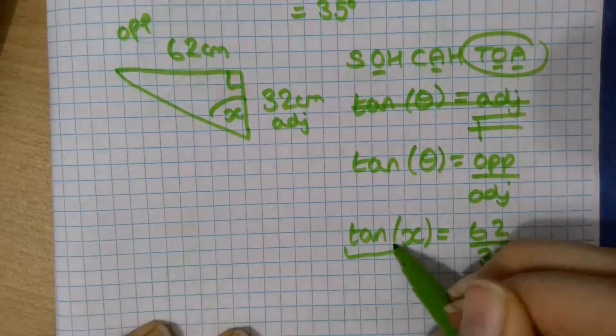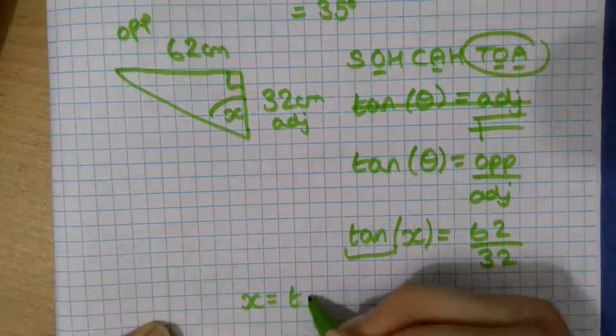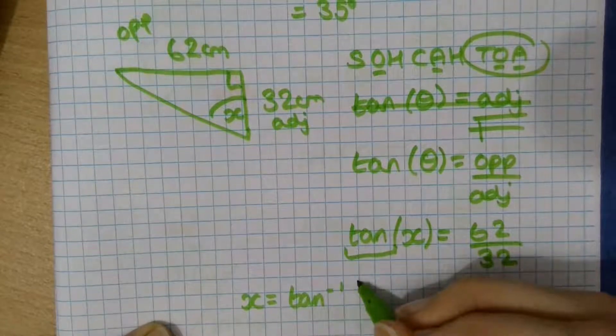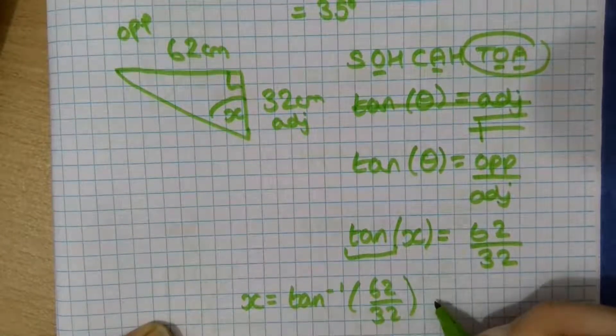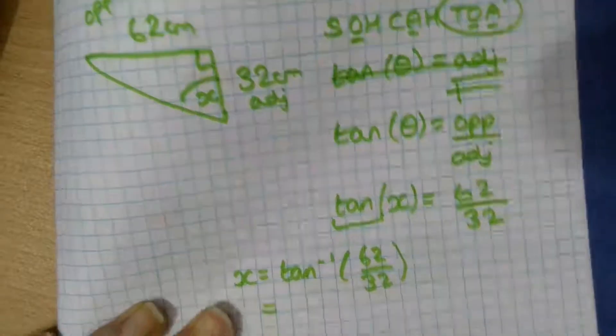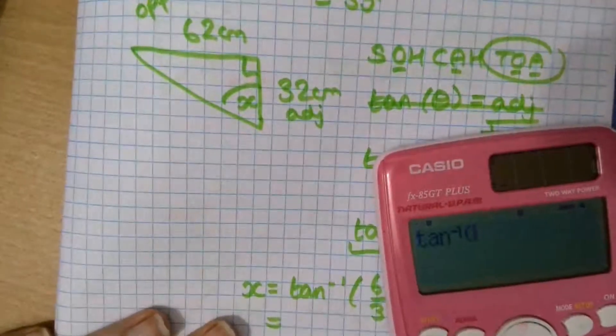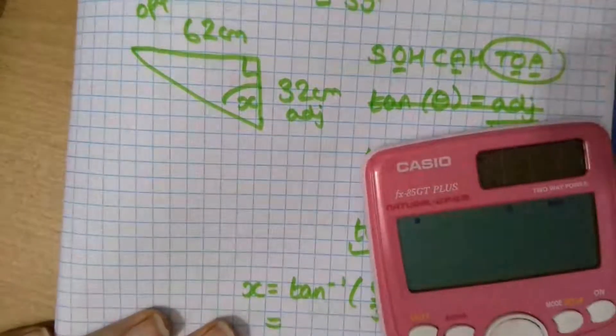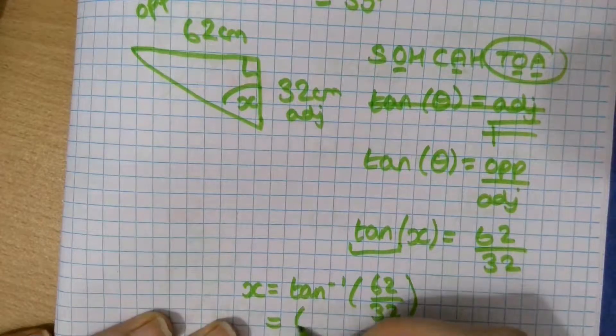Anyway, so we want to remove the function of tan. We're going to use tan inverse. And we're going to write that as tan with a little negative one power of my fraction, which is 62 over 32. And that's where I use my calculator. And that gives me 62.7 degrees, which is 63 degrees to the nearest degree.